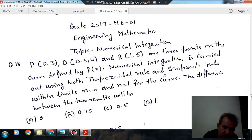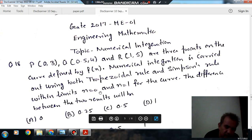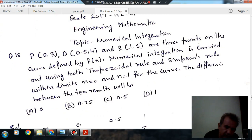...is carried out using both the trapezoidal rule and Simpson's rule with limits x equals 0 and x equals 1. For the curve, the difference between the two results will be: option A is 0, option B is 0.25, option C is 0.5, and option D is 1.